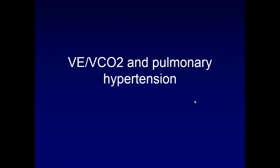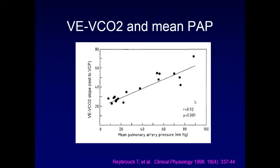Bringing this closer to home and looking at pulmonary hypertension: VE/VCO2 is really a surrogate marker for dead space ventilation. As patients have increased pulmonary artery pressures, their dead space ventilation or VE/VCO2 slope goes up, with a nice correlation coefficient and p-value of 0.01.